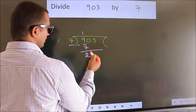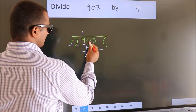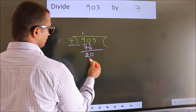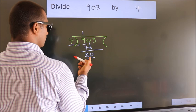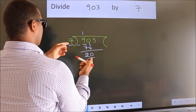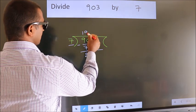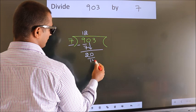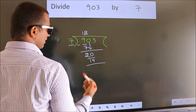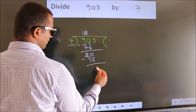After this, bring down the beside number. So, 0 down. So, 20. A number close to 20 in 7 table is 7 twos, 14. Now, we subtract. We get 6.